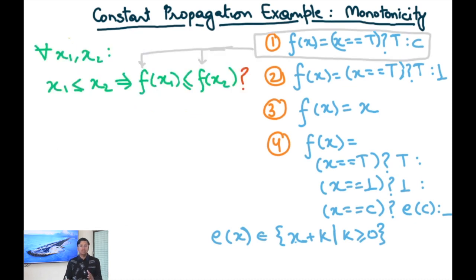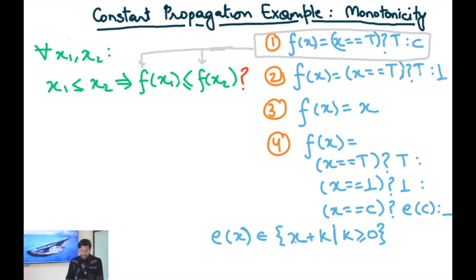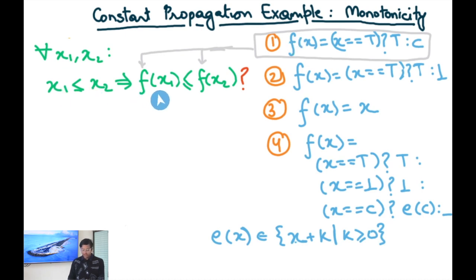We can take each transfer function one by one and check whether it satisfies the monotonicity property, which means: for all x1, x2 in the domain of the transfer function, if x1 ≤ x2, does that also imply that f(x1) ≤ f(x2)?